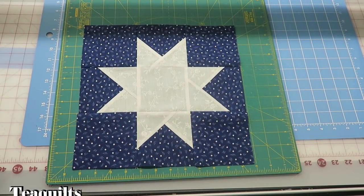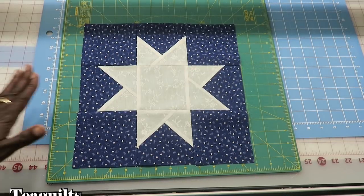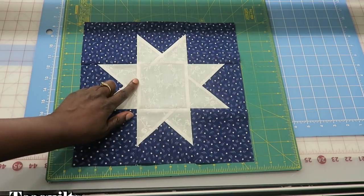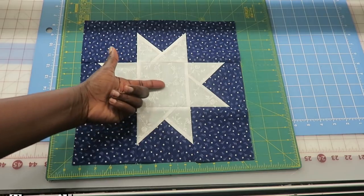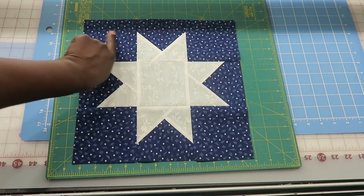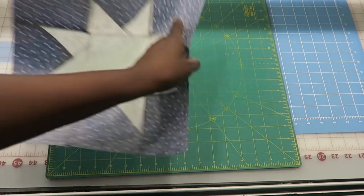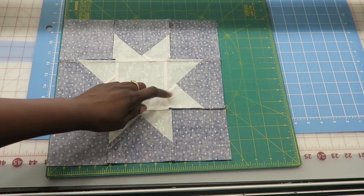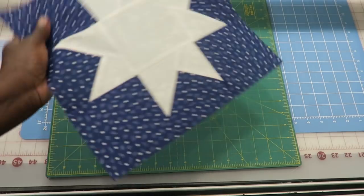Here's my completed floating evening star, or floating Ohio star, however you want to call it. And I did press my seams in opposite directions. In the center row, I pressed my seams toward the white square, and then on the top and bottom rows, I pressed my seams out toward the print square. So when you turn it over, you've got a pretty cool looking back. I gotta press that, but yeah, so that's your block.